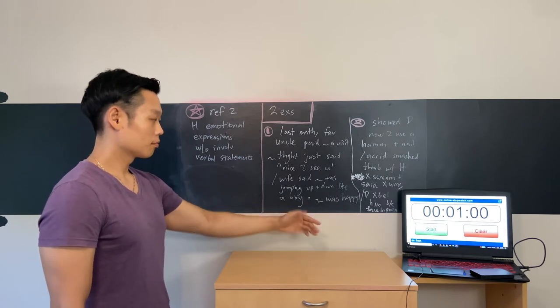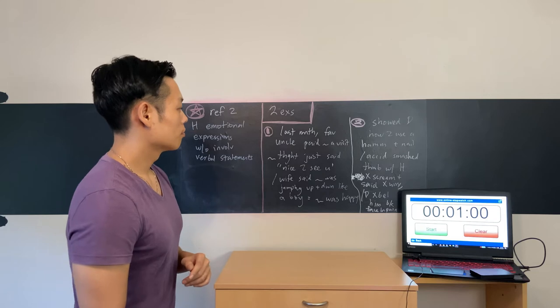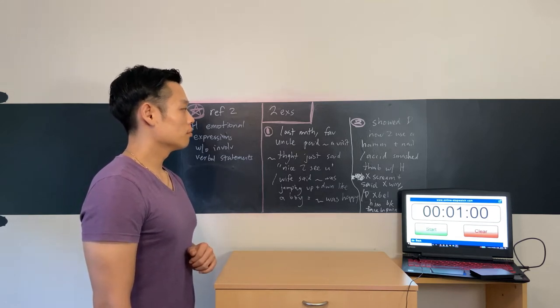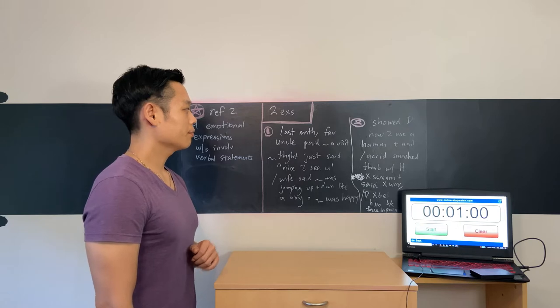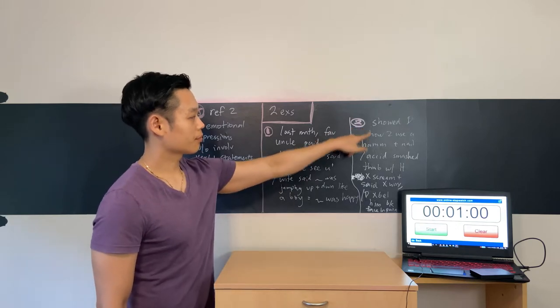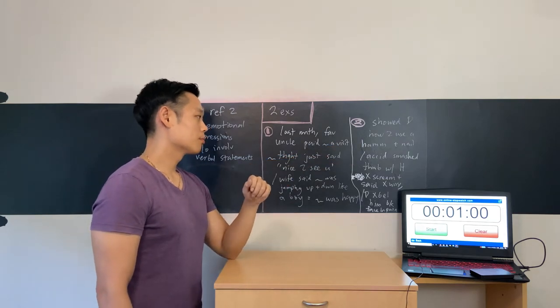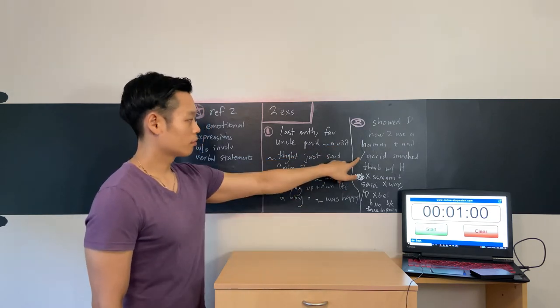But compare that with this: my daughter, she's six, we were building a birdhouse together last week and I was showing her how to use a hammer and nail. And of course, stupid me, I wasn't being very careful and I smashed my thumb with the hammer.